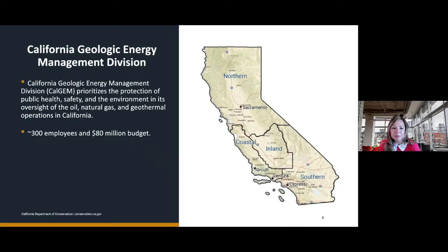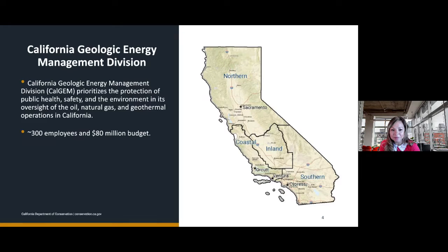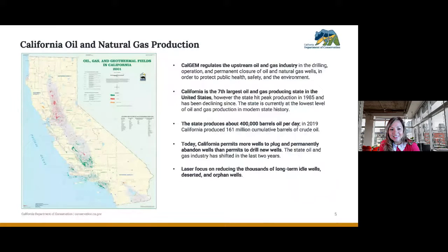CalGEM is a part of the Department of Conservation. We have about 300 employees and a budget of about 80 million dollars. We prioritize the protection of public health, safety, and the environment in our oversight of oil, natural gas, and geothermal operations in California.